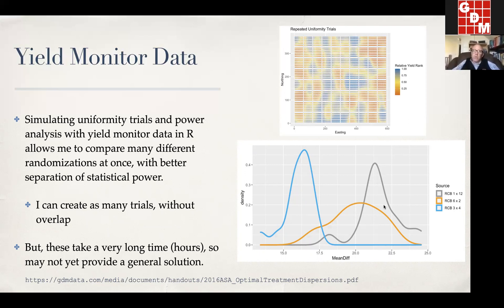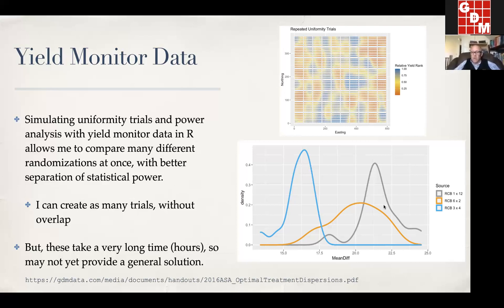When I compare block sizes with this simulation, I found a much larger effect of block size on percent mean difference. With a 1 by 12 block size, I required about 21% mean difference to detect significant differences among my treatments, versus about 16% mean difference with a block size of 3 by 4. So in this simulation, I got a very big increase in power for very little change in my trial map. The trouble is these simulations take much longer to run, so they're not as easily incorporated into a tool right now.